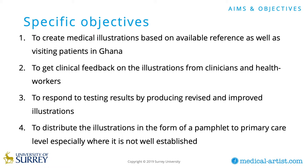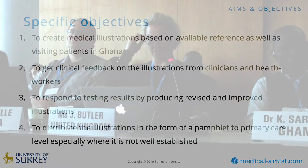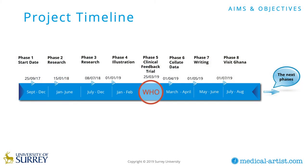From there a feedback process will occur by testing a response to the illustrations — first among clinicians, next among health workers in Ghana — eventually culminating in revised and improved illustrations. Beyond that, the objective is to distribute the best-performing medical illustrations in the form of a pamphlet to primary care level, especially in local community settings, to encourage early case reporting. This meeting forms a very important part of the testing process. The first set of Buruli ulcer illustrations are complete and I am now inviting clinical feedback. Phase 8 is where I shall be visiting clinics in Ghana, testing the illustrations among health workers, and seeing the disease first-hand for the first time.